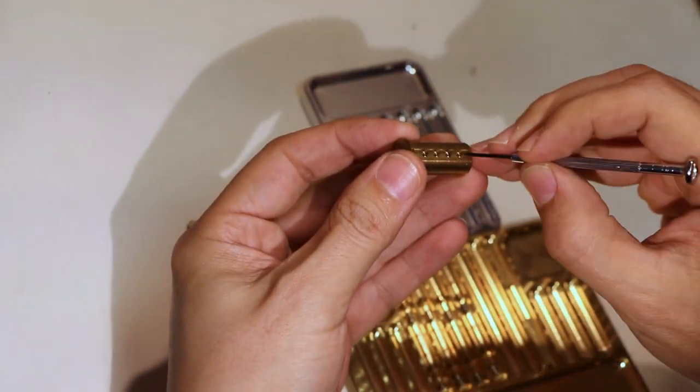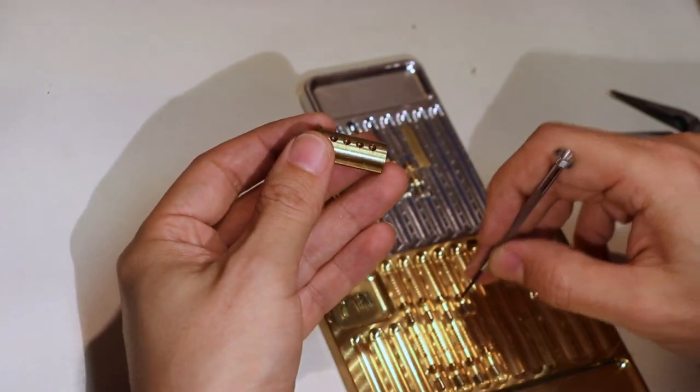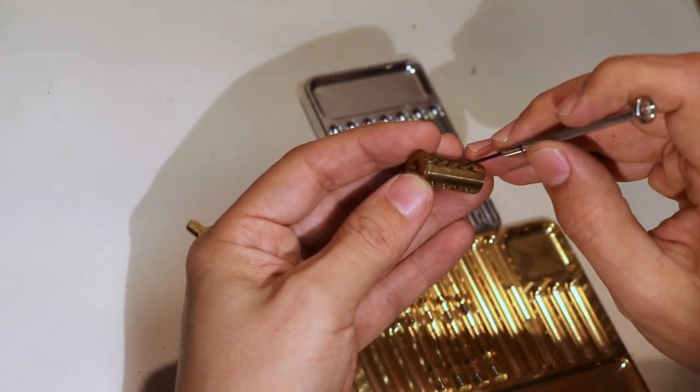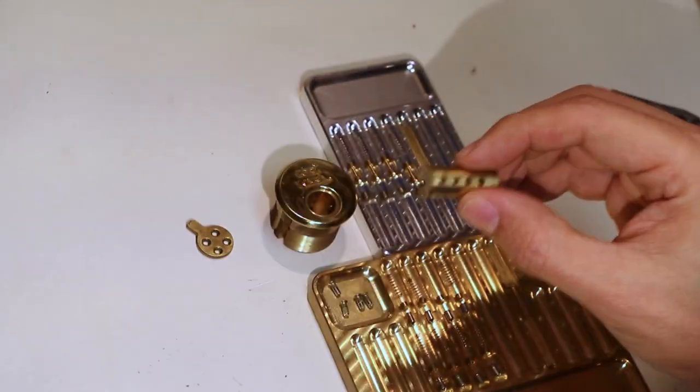So nothing special there about the core. Let's see. It has these little lips in the plug. That's just to catch these lips on the key pin so they don't drop into the keyway.